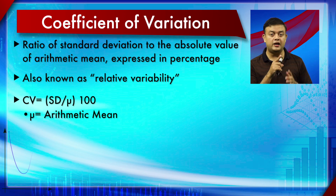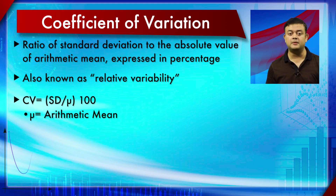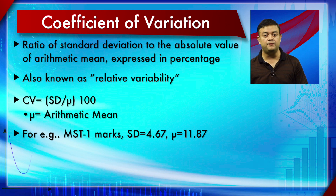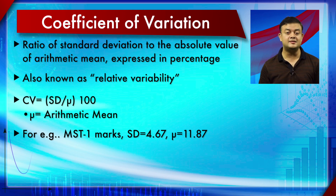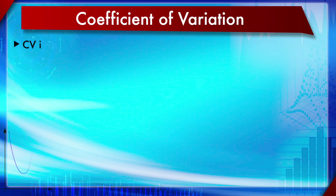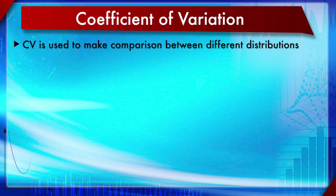The equation for CV is: SD divided by the absolute value of mu, multiplied by 100. For example, using our earlier data on marks where standard deviation was 4.67 and mean was 11.87, plugging into the equation gives a CV value of 0.39.